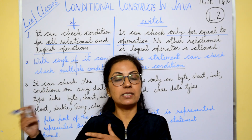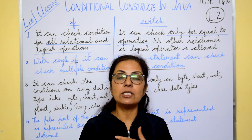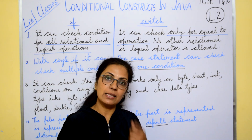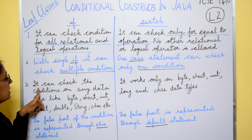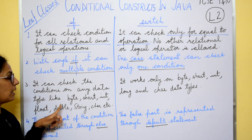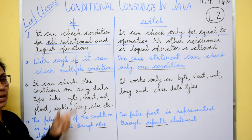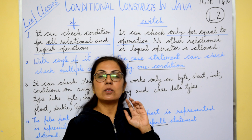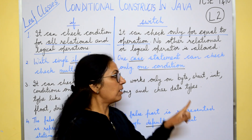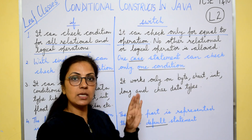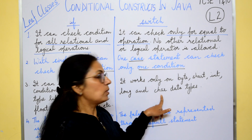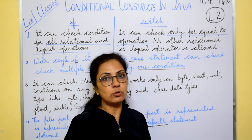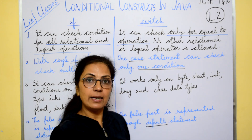Third difference: if can check a condition on any data type — byte, short, int, float, string, char — all data types work with if statement. But for switch construct we work only with integer types (byte, short, int, long) and char. String is allowed in a few versions of BlueJ but we will go only with integer and char values.